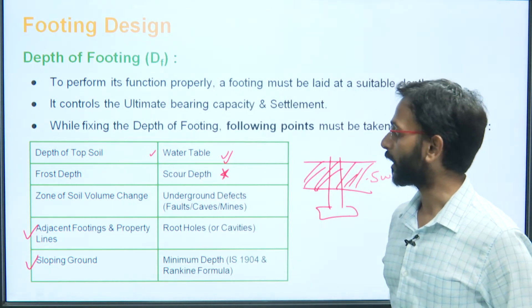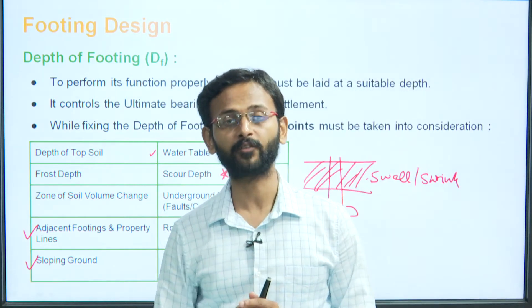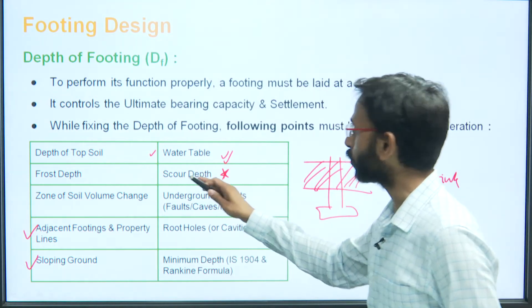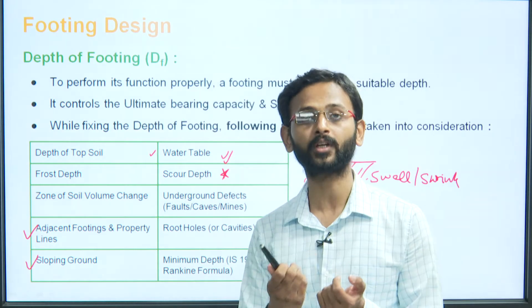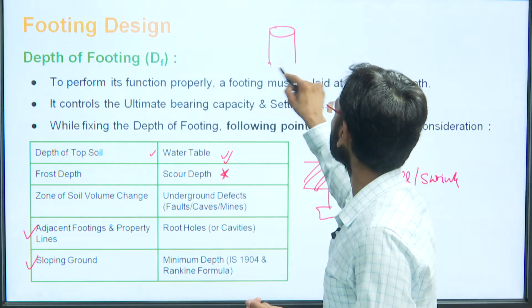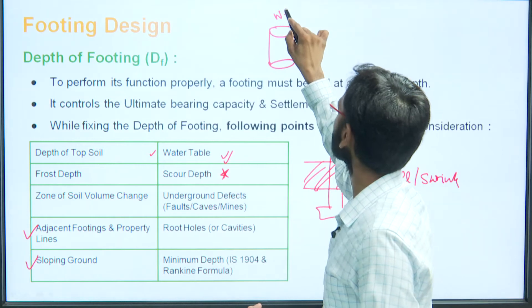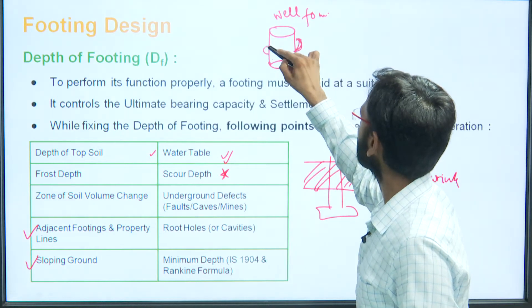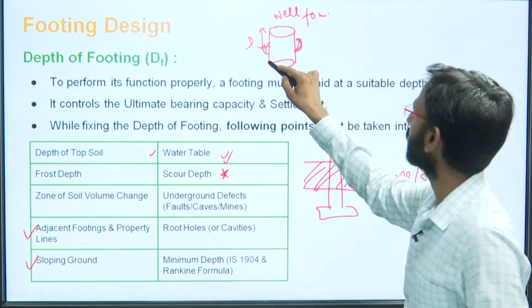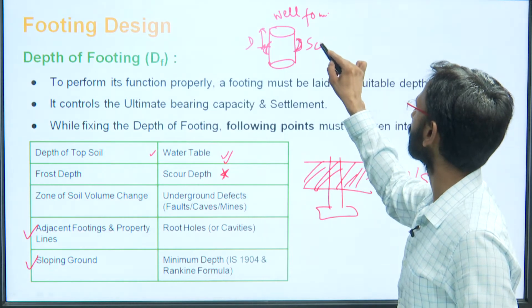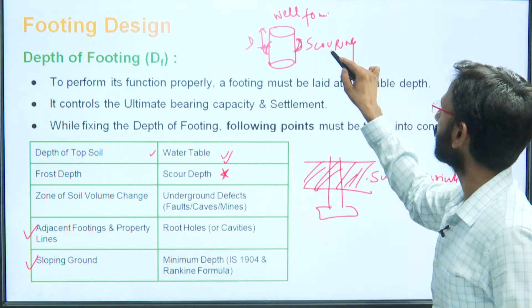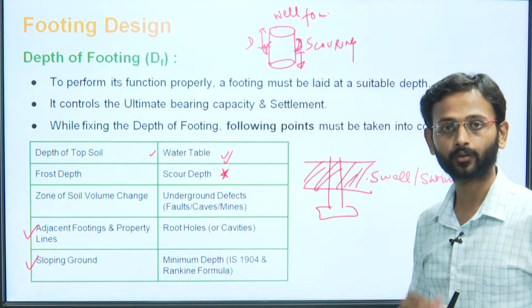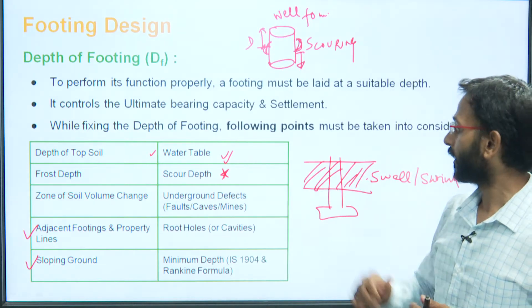Next is the scour depth, which is a major factor in well foundation design. Wherever scouring action is occurring — if scouring is observed up to a certain depth — construction must be carried out below that scour depth. Next is underground defects such as faults, caves, and mines. If such conditions exist, we have to take them into consideration and place our structure below them.